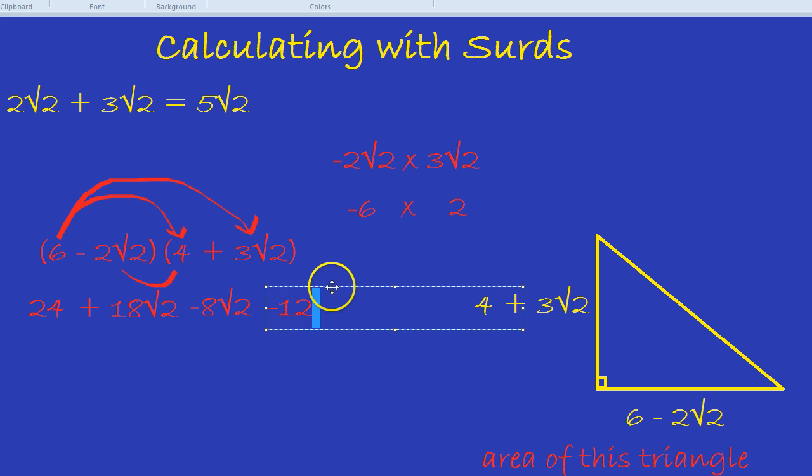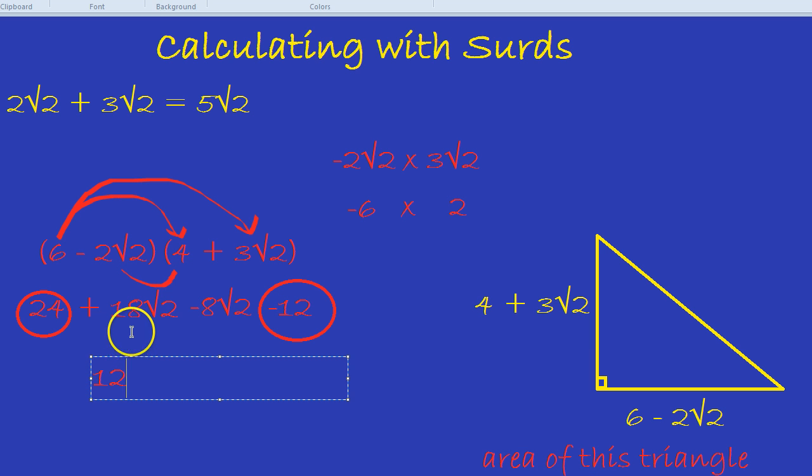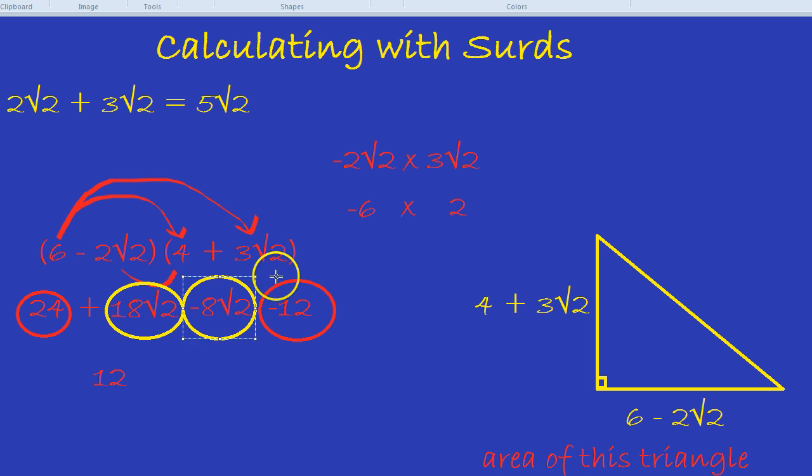There we have the multiplied out version of these brackets. Let's gather together like terms. 24 minus 12. Notice we're focusing on the numbers. You can't mix together the roots and the numbers. They're separate. 24 minus 12 is 12. 18 root 2 take away 8 root 2. You deal with the surds separately. 18 root 2 take away 8 root 2 is indeed 10 root 2. So we now have plus 10 root 2. And there's our answer.